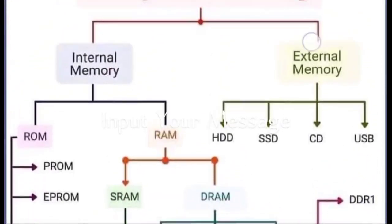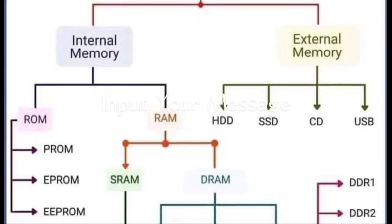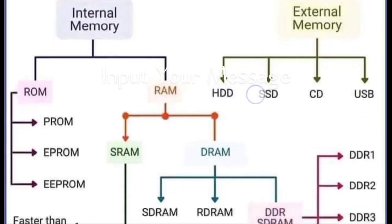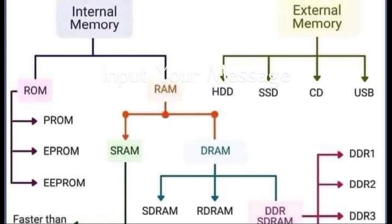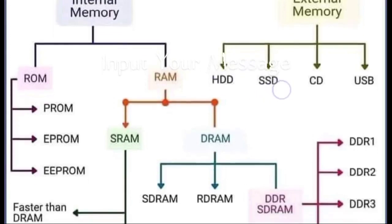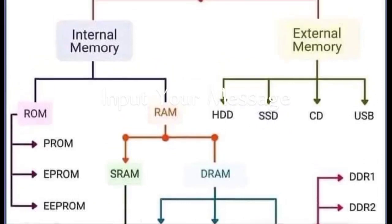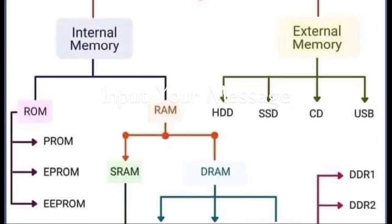Now we are going to look at external memory — what it is and its types. The parts of external memory include HDD, hard disk. A hard disk is used in laptops and desktops to store data, movies, and anything else. Nowadays, laptops are moving away from hard disks and using HDD and SSD. HDD is similar to a hard disk and is also used to read and write data.